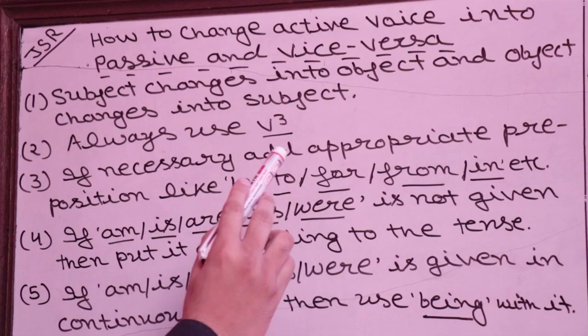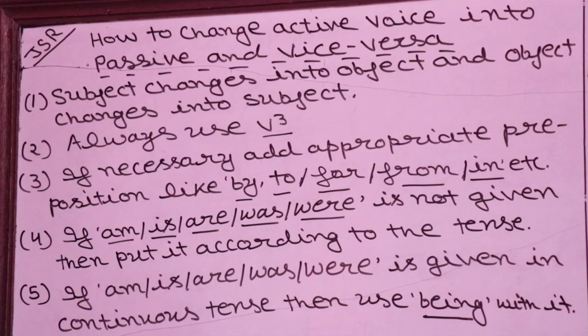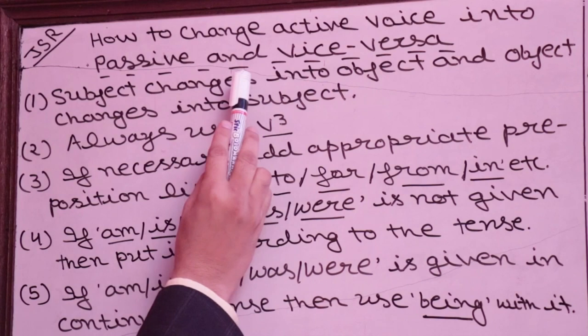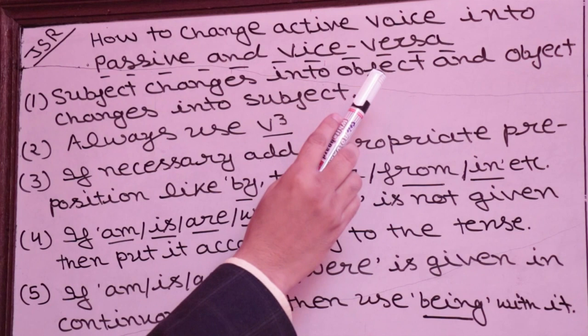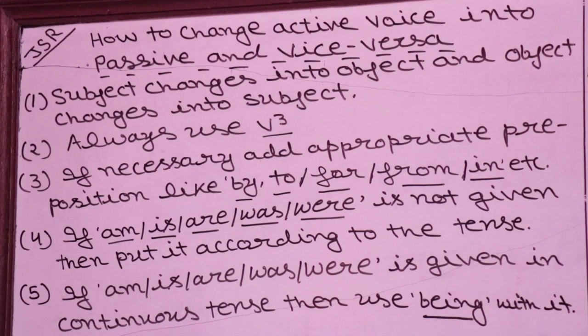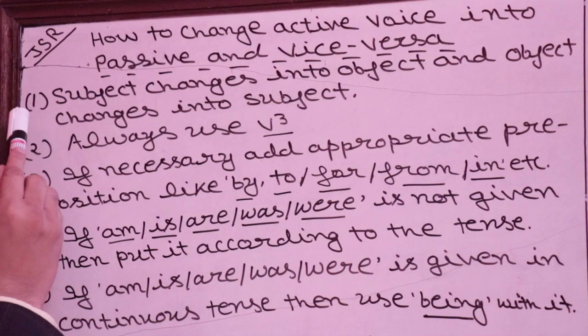You can pass any competitive exam confidently if you just follow the ten rules. Let's look at how to change active voice into passive voice and vice versa. There are only ten rules you have to follow — these are ten golden rules. Look at the rules carefully.